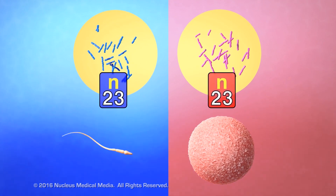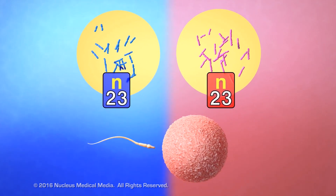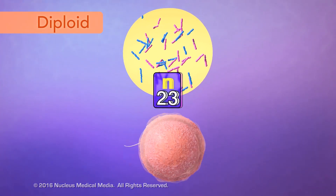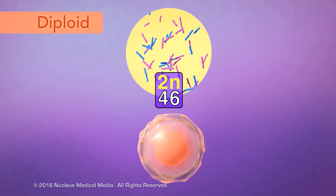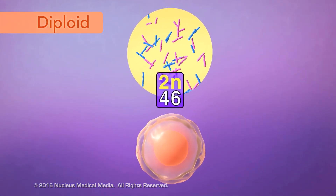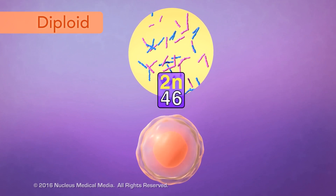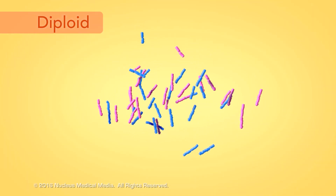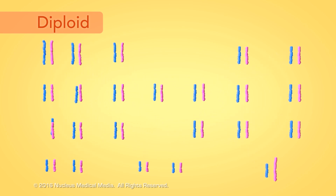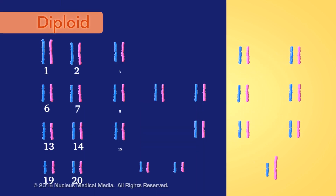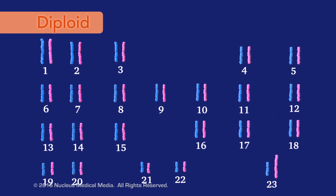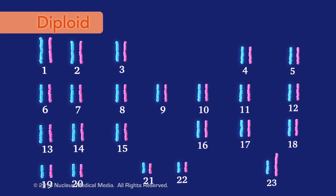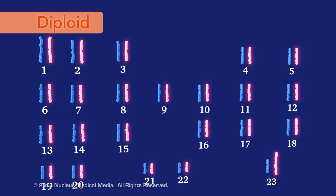This is important, since the union of gametes during fertilization creates a diploid cell called a zygote, with two sets of chromosomes, for a total of 46. At fertilization, the chromosomes from each parent match up to become the new pairs of chromosomes in a zygote.